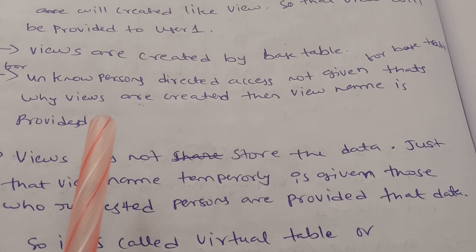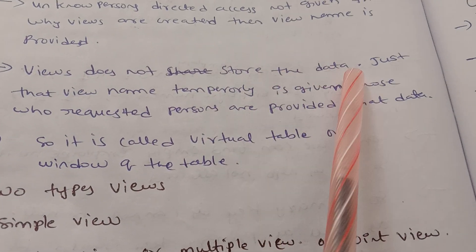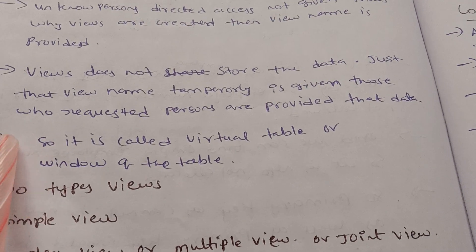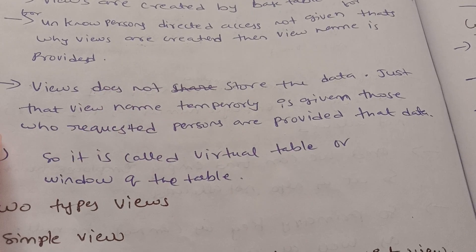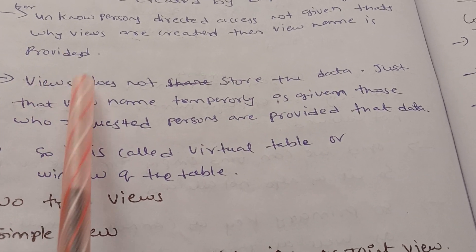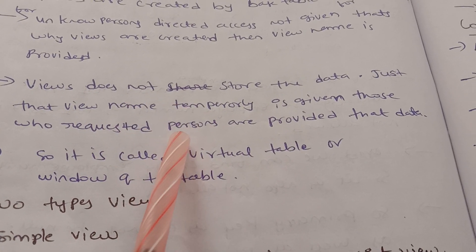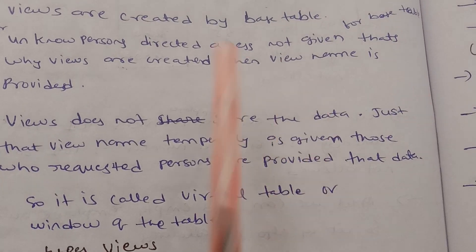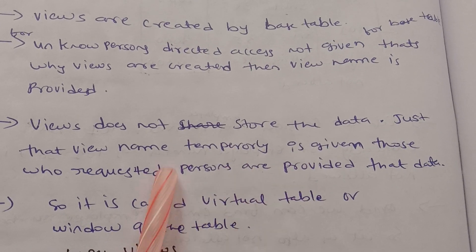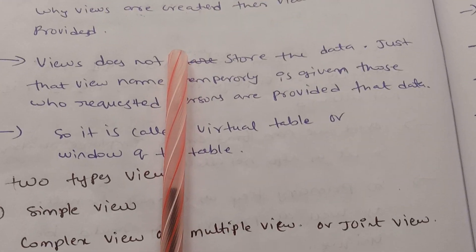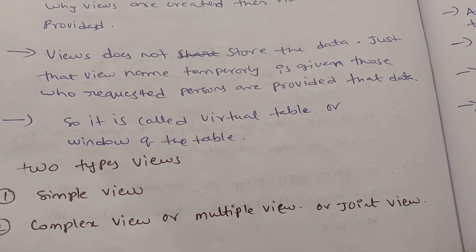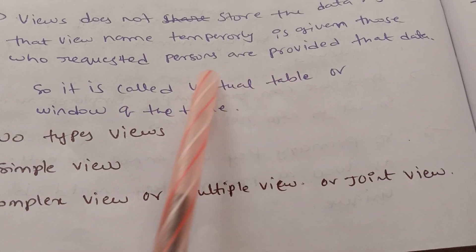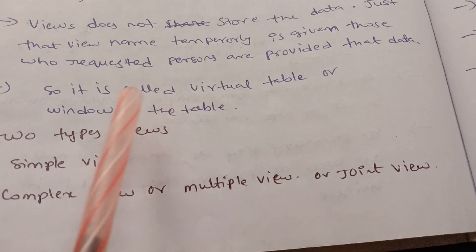A view does not store data. Just that view name is temporarily given, and those who request are provided that data. So it is called a virtual table, or a window of the table. A virtual table is not a real table — it has no real memory, just temporary.